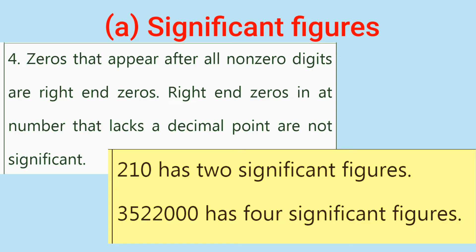Rule number 4: Trailing zeros with no decimal point. Example: 210 has 2 significant figures. 3,522,000 has 4 significant figures.